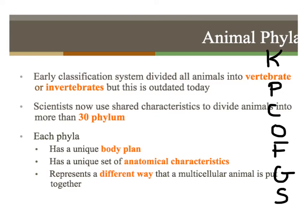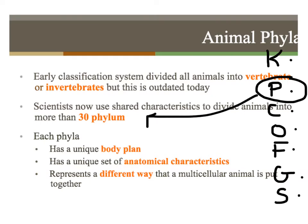A good mnemonic to remember the classification hierarchy would be: King Philip Came Over For Good Spaghetti. Each phylum has a unique body plan, a unique set of anatomical characteristics, and represents a different way that a multicellular animal is put together.